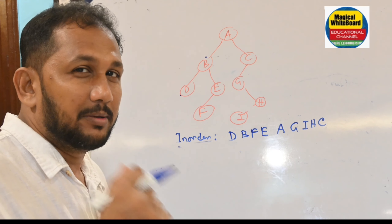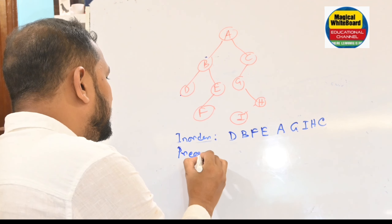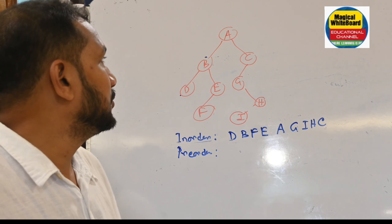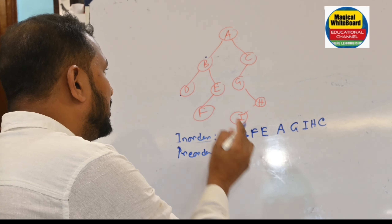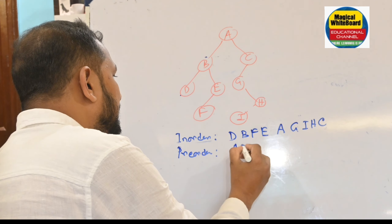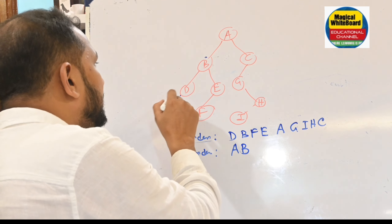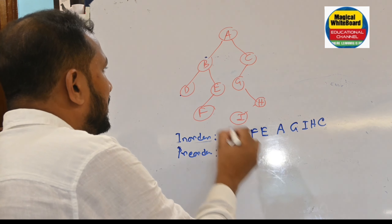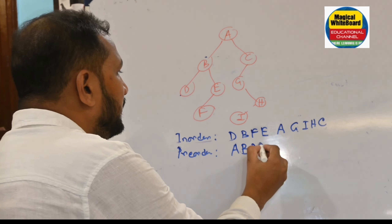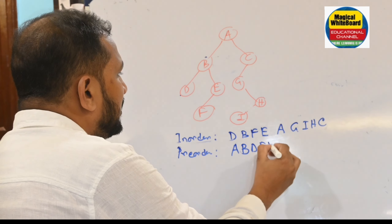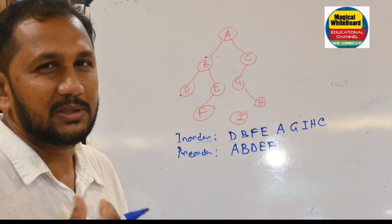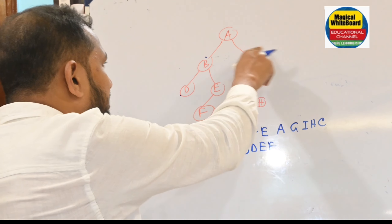Now let us consider the pre-order traversal. In pre-order, we visit the root first. Root node is A, then go to the left subtree. From all nodes of the left subtree, visit the root again — that is B. Left subtree of B has only one node, D. Then from the right subtree of B, visit root E, then left (F), there is no right node. The left subtree is fully visited.